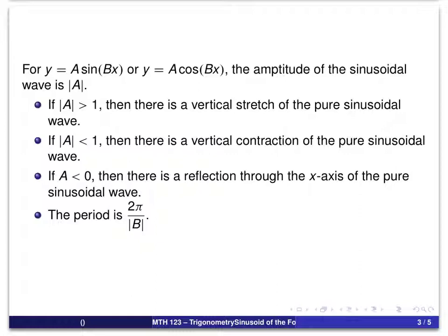And basically, if absolute value of a is greater than 1, it stretches the graph vertically so that the high point of the graph will be at y equal to a and the low point will be at y equal to negative a.